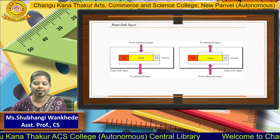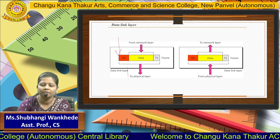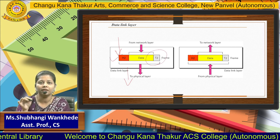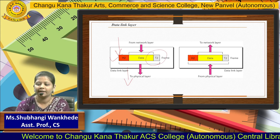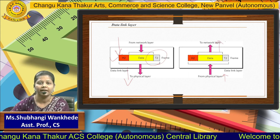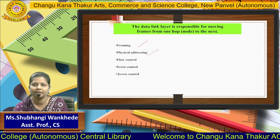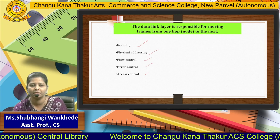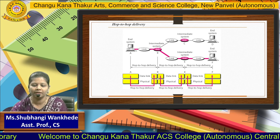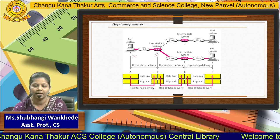The data link layer gets data from the network layer and sends it to the physical layer, adding a header and converting data into frames. At the receiver side, it gets data from the physical layer and transfers it to the network layer. The responsibilities of the data link layer are framing, physical addressing, flow control, error control, and access control. It handles hop-to-hop delivery, meaning each system receives data in the form of frames.